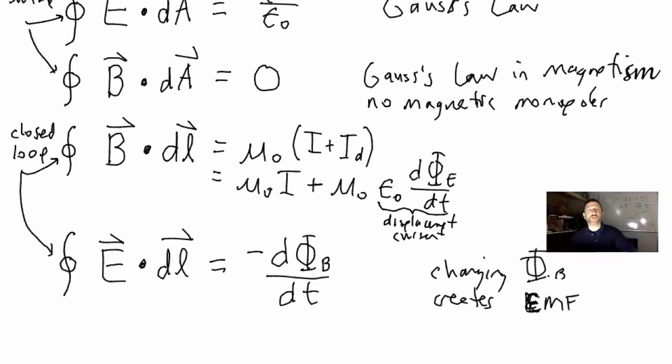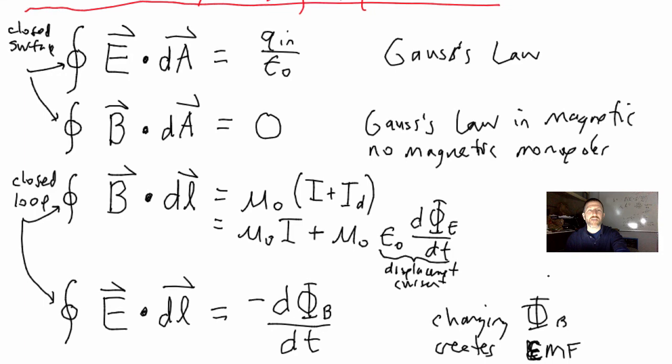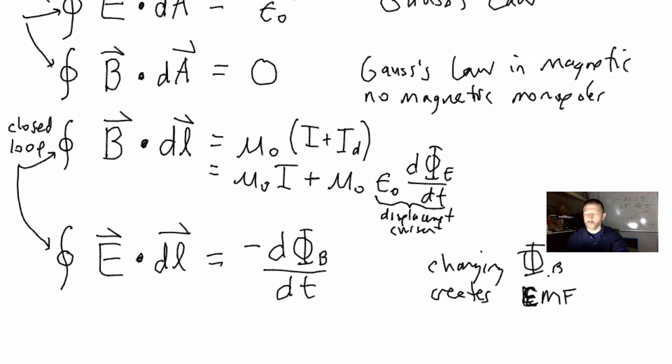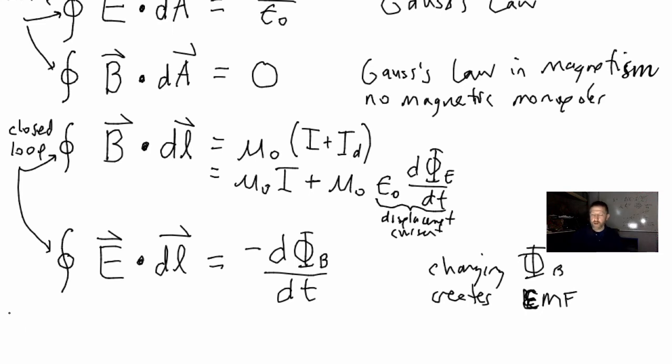Now this is almost everything that describes all of magnetism. There's one more law that is called the Lorentz Force Law, but we've already covered it. We just didn't call it the Lorentz Force Law. The Lorentz Force Law says that the net force on a charge equals, what is the electric force on a charge?